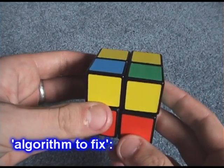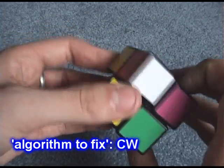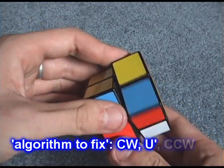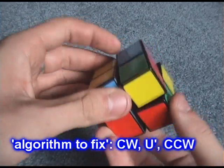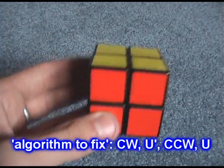So, let's fix these now. This needs to be twisted clockwise. We're going to do d'r'dr, d'r'dr and this piece needs to be twisted counter clockwise. It's going to be r'd'rd, r'd'rd. Lastly, we just need a u to compensate for the u' we did earlier in the algorithm.